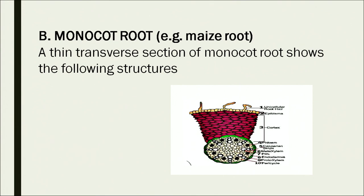In the monocot root diagram: number 4 is the phloem, number 5 is the Casparian strip — the thickened part of the endodermis — which channels the flow of liquid. Number 6 is meta-xylem. Number 7 is the center or pith, where storage of food can happen. Number 8 is the endodermis, number 9 is proto-xylem, and number 10 is the pericycle. This is how monocot and dicot roots differ from each other.